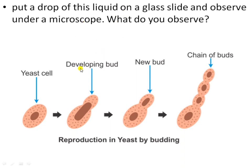Budding is a type of asexual reproduction where a small part of the yeast cell grows into a bulb-like projection. This is a developing bud — a new bud is a bulb-like projection. After some time it gets detached and produces a new yeast cell.